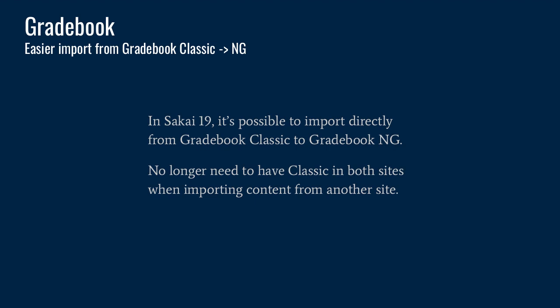Another thing that's new in 19 is an easier import from Gradebook Classic. It's easier if you're bringing over a course from a prior semester. In Sakai 12, you had to have Gradebook Classic available in both sites in order to roll the gradebook over and then activate the new gradebook. Now you don't need to do that. If you're copying a site from a prior term, you don't need to have Classic available in both sites — you can just import it, and it will automatically put it into the new gradebook format.